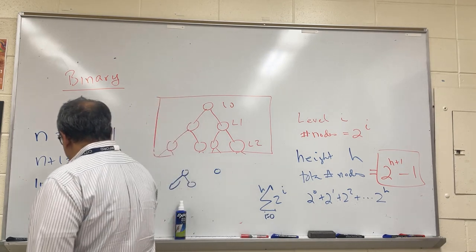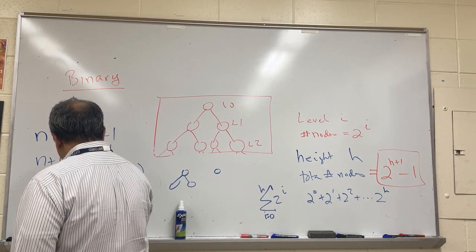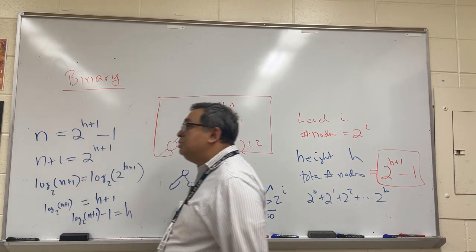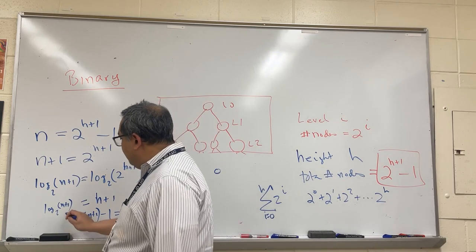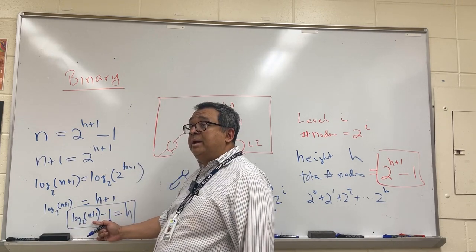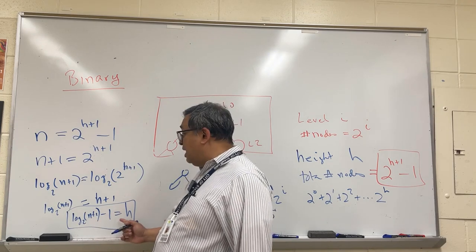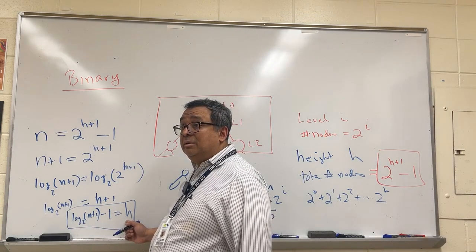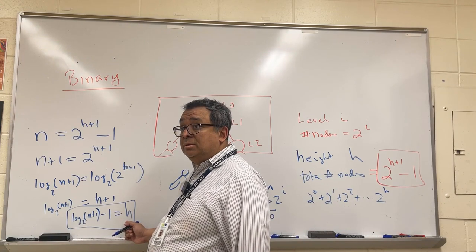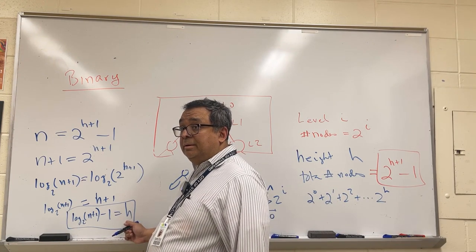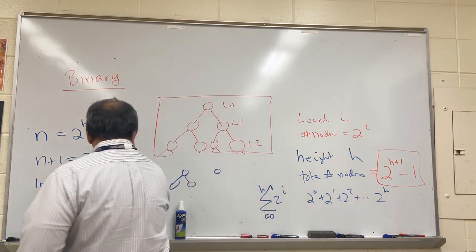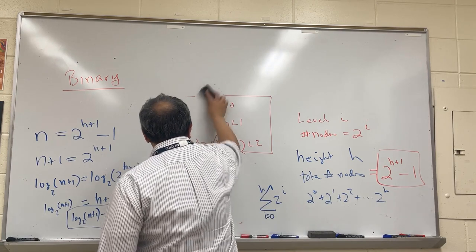The last step: subtract one from both sides. So h = log₂(n + 1) - 1. This is the formula where if I tell you how many nodes there are in the perfect binary tree, you can use it to calculate the height of the tree. This is going to be more useful to us than the other formula.